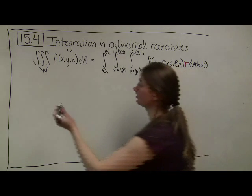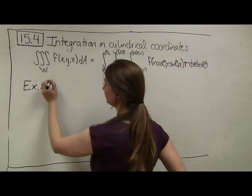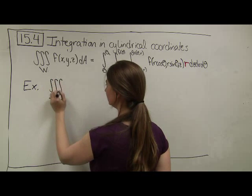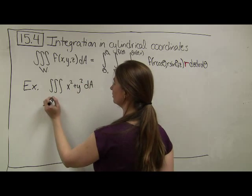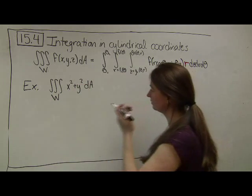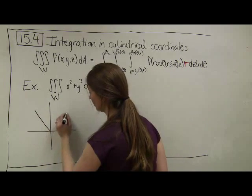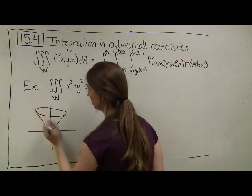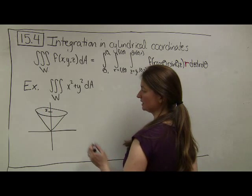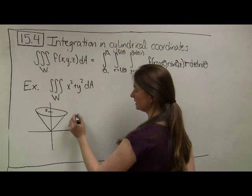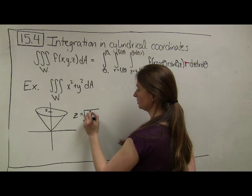Let's see an example. Let's say that I am wanting to integrate the function x squared plus y squared over some volume W. In this case, our volume W is given by a cone. Let's say that our cone has height 2.